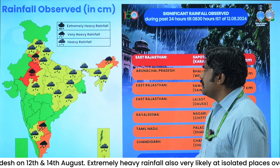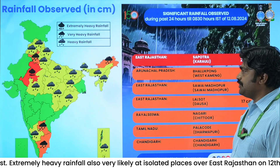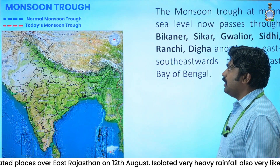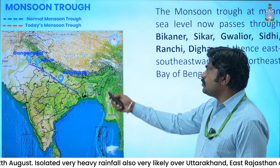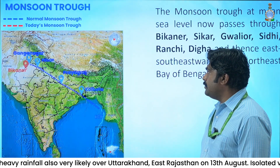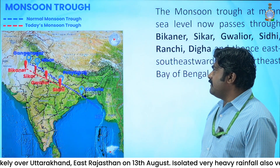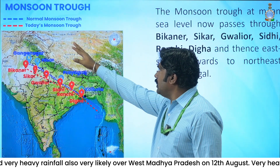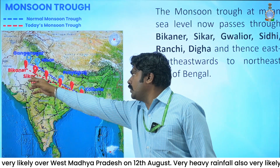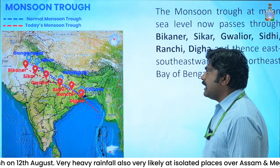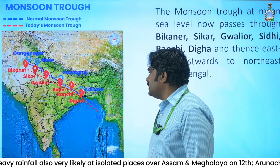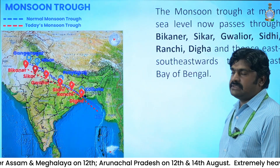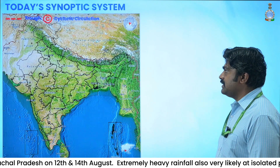The local color shows heavy rainfall observed over those places. This is the monsoon trough. The normal monsoon trough passes over Ganganagar, Ishsar, and Prayagraj and Kolkata. As on today, it was south of the normal monsoon trough, passing over Bikaner, Shivpuri, Siddhi, Ranchi, Deoghar, and then connecting to the east-central Bay of Bengal. This is today's synoptic system.